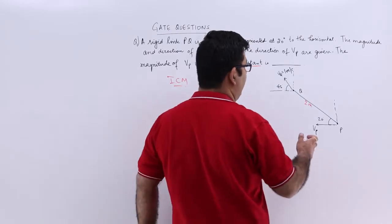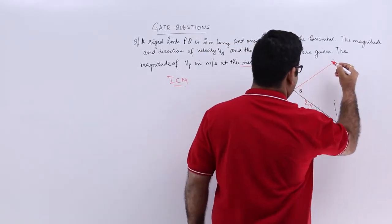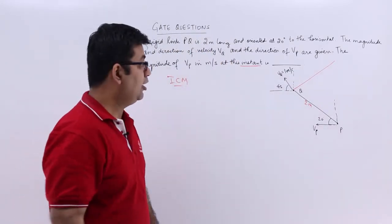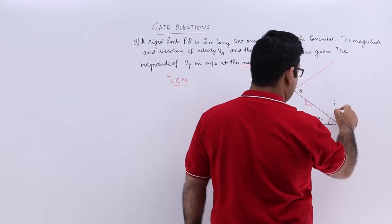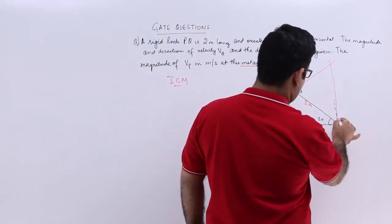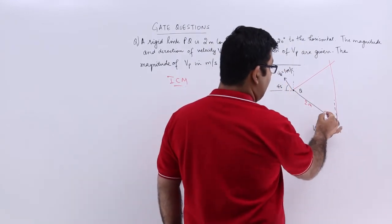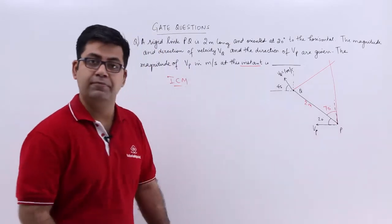I will draw a line which is perpendicular to this velocity, and another line perpendicular to this velocity. If this is 20 and this entire angle is 90, this will become 70.